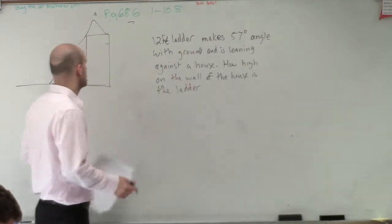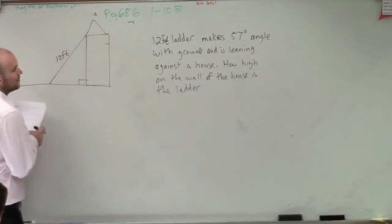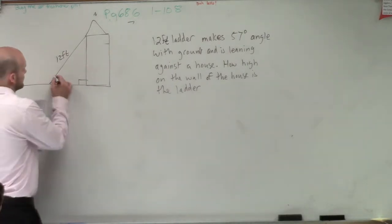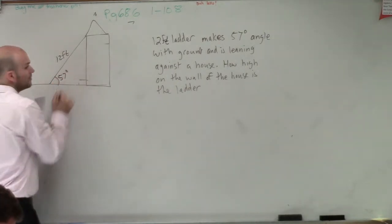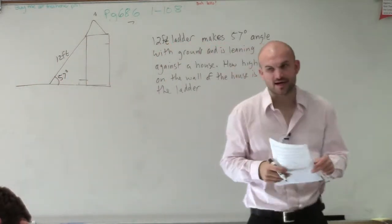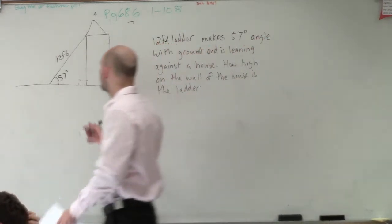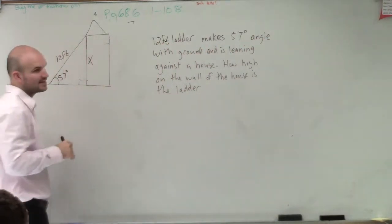So they're saying it makes a 57-degree angle with the ground. 57 degrees. It didn't say 57 degrees with the house. It says 57 degrees with the angle. So what we're trying to do is determine this length, the height.